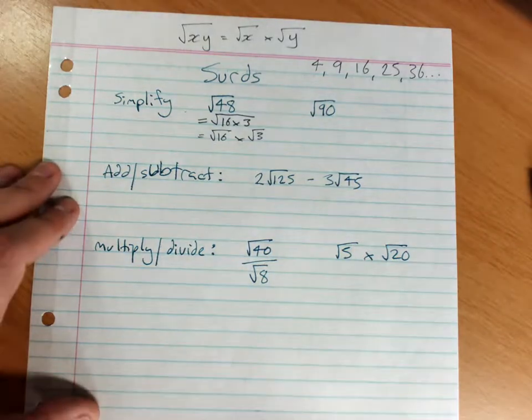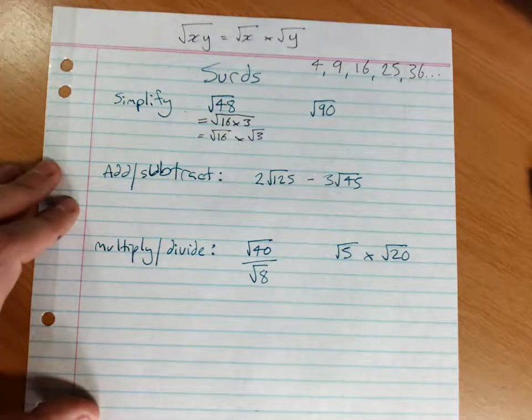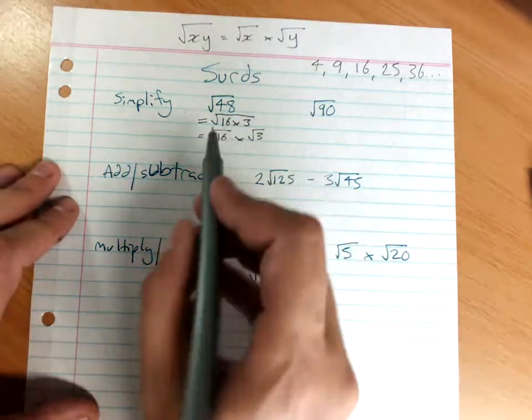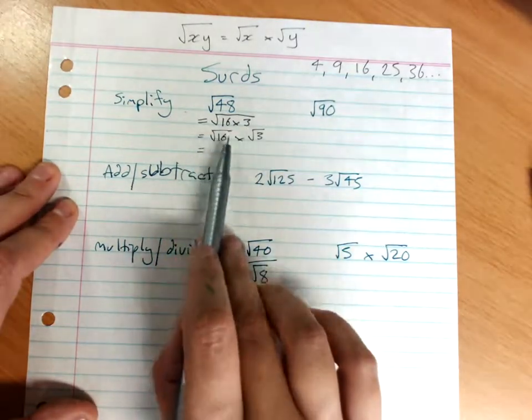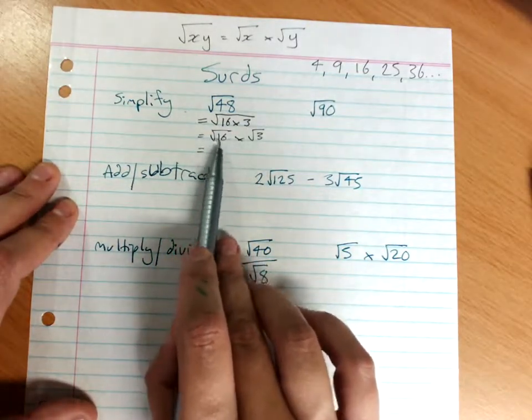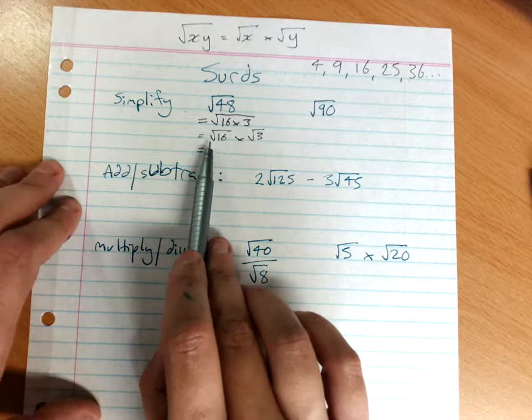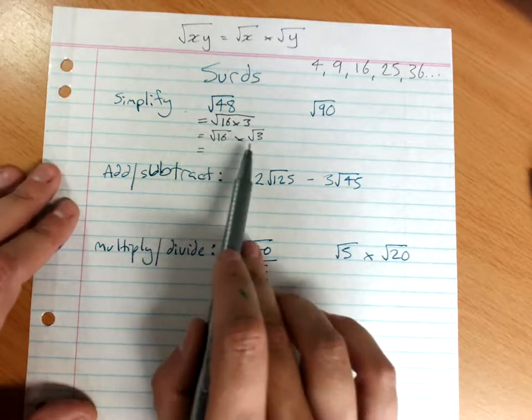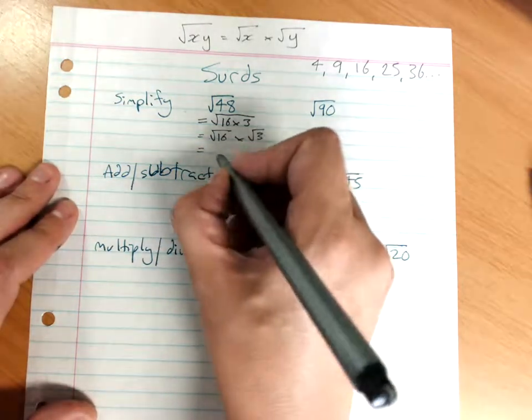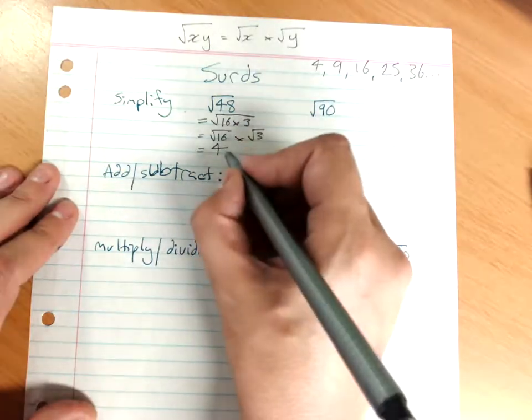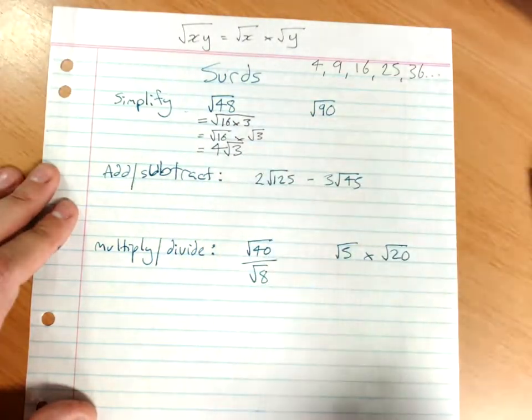You can't just go straight to the answer, because you can do that on your calculator, and I don't know that you've got it. The reason that you always put your perfect square number first, is because then the square root of 16, which is why we went for these square numbers, is 4. 4 times root 3, we just write 4 root 3.